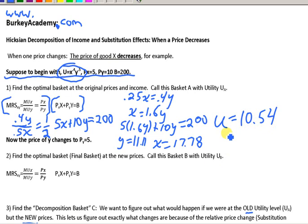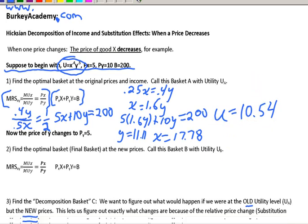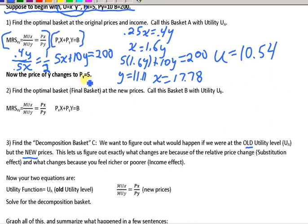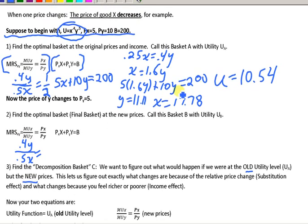Now one of the prices changes — the price of y is going down to $5, so we should buy more y and be happier. We're going to have the same MRS: 0.4 over 0.5 times y over x. But now the price ratio is px over py equals 5 over 5 equals 1. The budget line changes to 5x plus 5y equals $200.